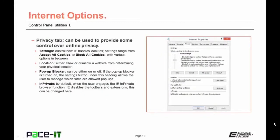The Location section either allows or disallows a website from determining your physical location through your IP address. The pop-up blocker can be turned on or off — if on, the settings allow the user to manage which sites are allowed to use pop-ups. The InPrivate section: by default, when the user engages Internet Explorer's InPrivate browser function, Internet Explorer disables toolbars and extensions, but this can be changed.